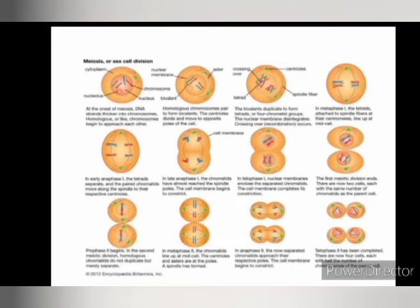At the onset of meiosis, DNA strands thicken into chromosomes and homologous chromosomes begin to approach each other. The second step: homologous chromosomes pair to form bivalents, the centrioles divide and move to opposite poles of cells. The third: the bivalents duplicate to form tetrads or four-chromatid groups, the nuclear membrane disintegrates, and crossing over or recombination occurs. In metaphase one, the tetrads attach to spindle fibers at their centromeres and line up at mid-cell.